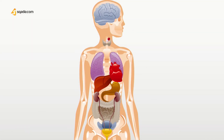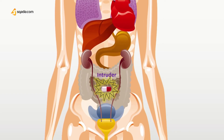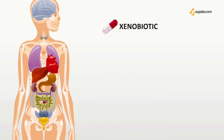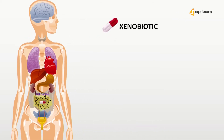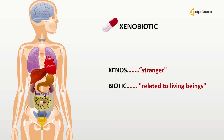The entrance of any drug in your body is like an intruder entering into your body. What should be done to deal with an intruder? Our body treats the drugs as something foreign, which is why they're also called xenobiotics. Xenos stands for stranger and biotic is related to living beings. In simpler words, it is something strange, separate, or foreign to the living being.